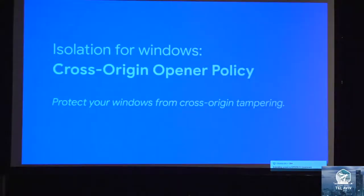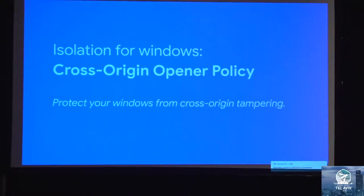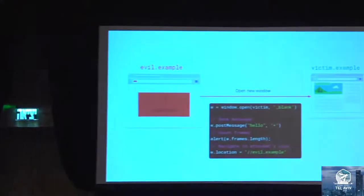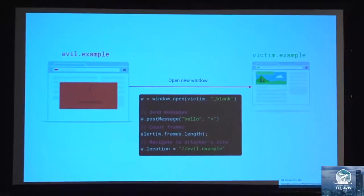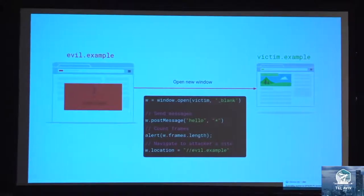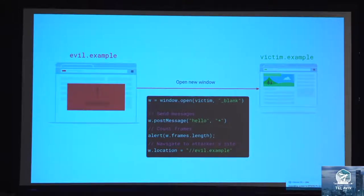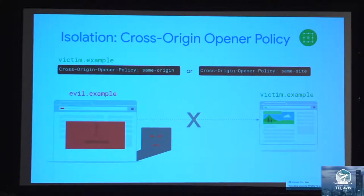Switching to the next new feature: Cross-Origin Opener Policy. This addresses the isolation issues related to window references — the second category we covered earlier. As we already said, any site on the internet can open your site in a new window and have a reference to that window. With that reference, they can send post messages, count frames, leverage side channels to learn about your site — for example, finding out if the user is logged in — and they can also navigate your site away to an arbitrary other site.